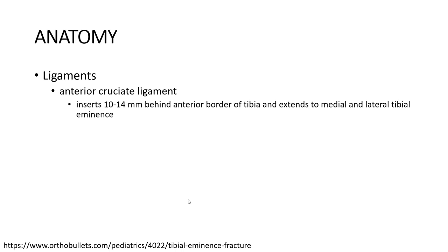Ligament anatomy: the anterior cruciate ligament inserts 10 to 14 mm behind the anterior angular border of the tibia and extends to the medial and lateral tibial eminence.